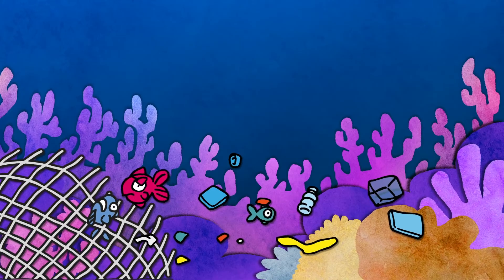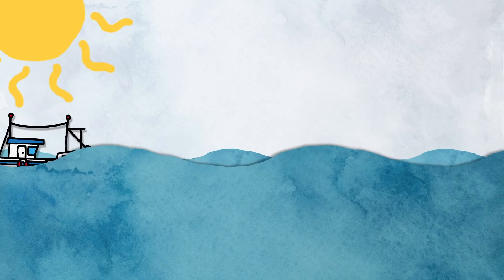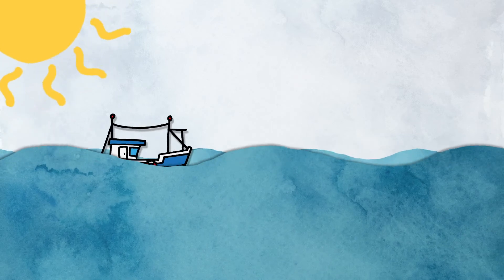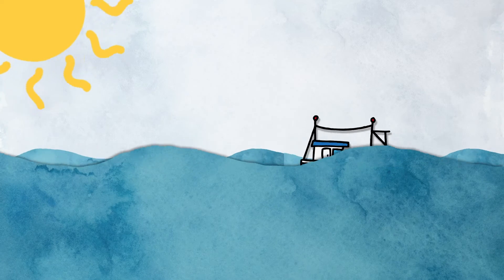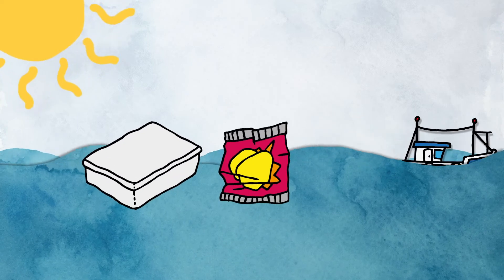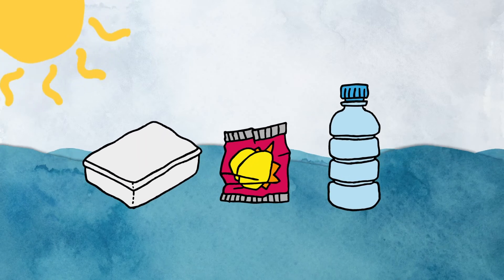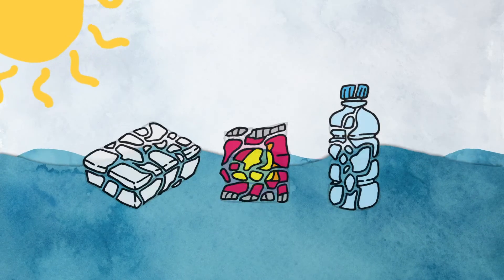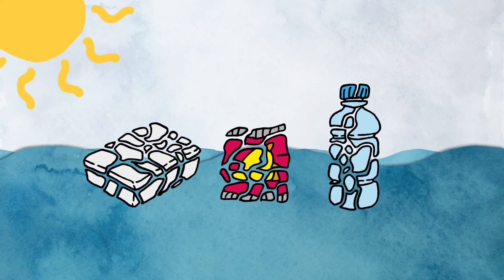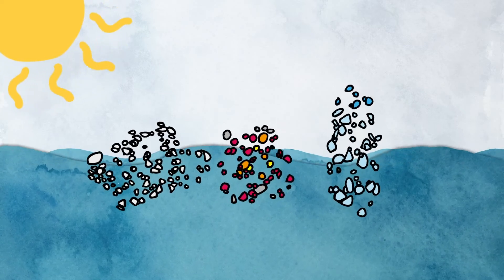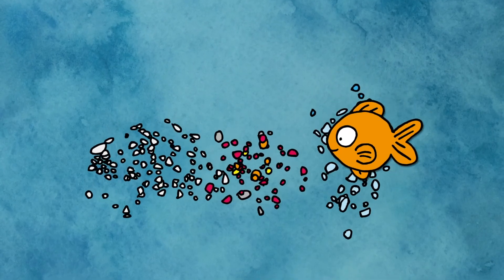The most common marine litter found in the ocean is plastic. Plastic is used to make many items that we use and throw away every day, like containers, food wrappers, and bottles. Waves and sunshine can make the plastic in the seas and oceans get smaller and smaller. In the end, they become tiny microplastics, which can be bad for both marine animals and humans if eaten.